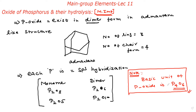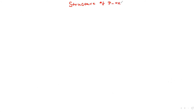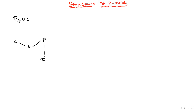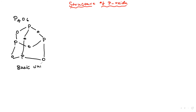Now I am going to explain the five structures of the oxide of phosphorus one by one. Please note: structure of phosphorus oxide — very important. The basic unit is P4O6. In this adamantane-like structure, we have phosphorus, then oxygen, then phosphorus, then oxygen, alternating — giving four phosphorus and six oxygen. This is the basic unit P4O6.